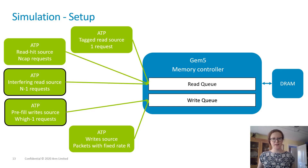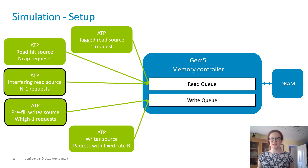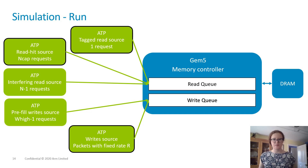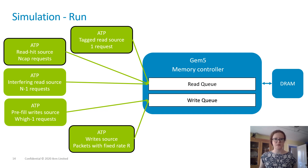A set of ATP masters were used as the input to a DRAM memory controller modelled in GEM5. The controller had a small modification so that until the tagged request had been received, it would remain locked and not serve any requests. This allowed the interfering read source and pre-fill write source to fill the read and write queues without any packets being immediately served. Once the queues had been set up, the tagged request was issued, allowing the controller to start serving requests. The read-hit source provides end-cap hits that overtake the tagged read, and a second write source issues packets with a variable rate. The controller was also modified to trigger a refresh cycle once all read-hits had been served, as the worst-case delay should include at least one refresh.